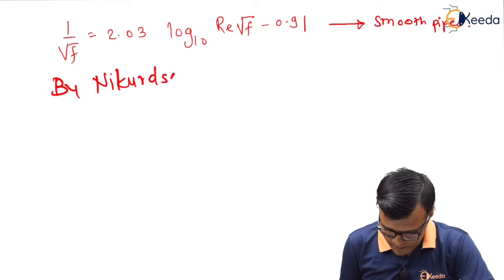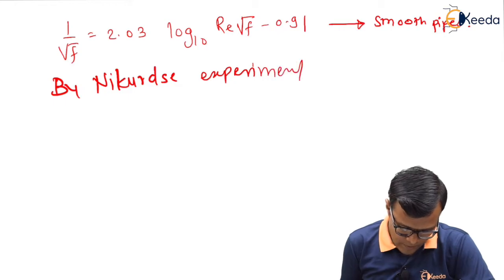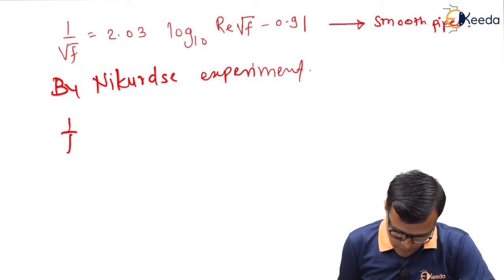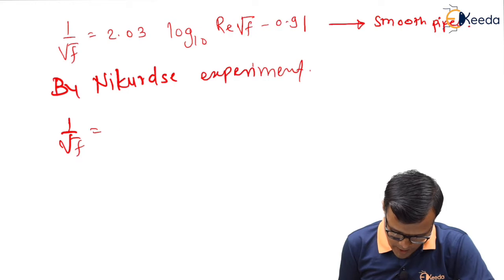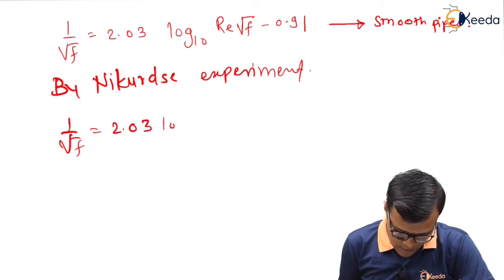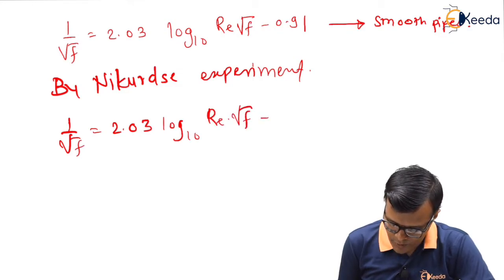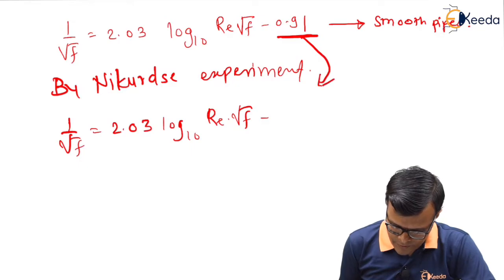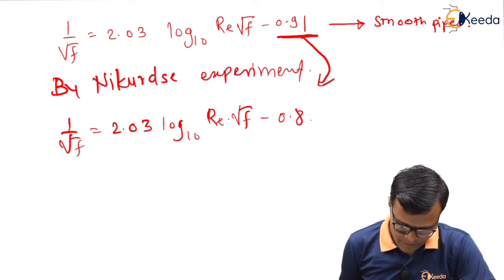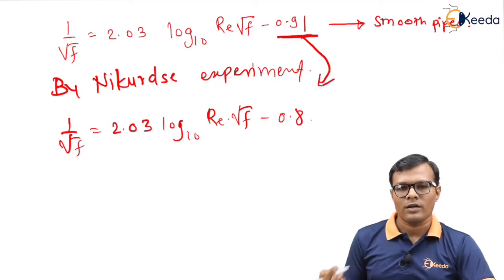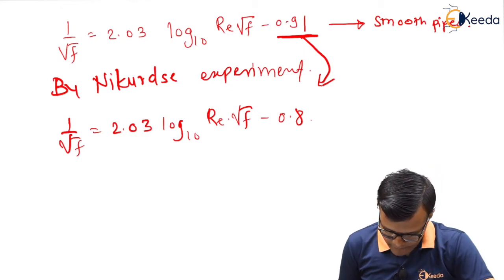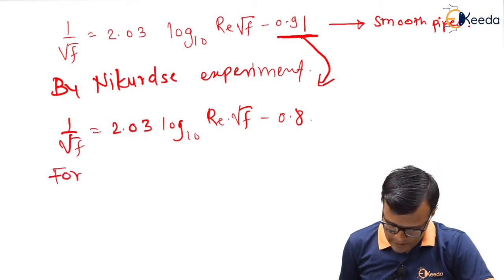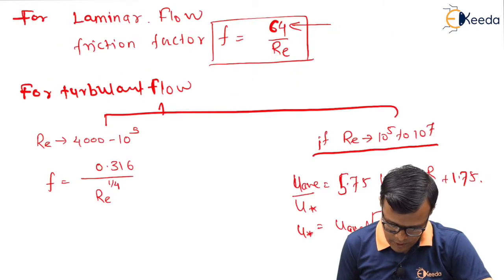By Nikuradse experiment, 1 upon root F can be given by equation as 2.03 log to the base 10 Re into root F minus instead of 0.91 it is 0.8.